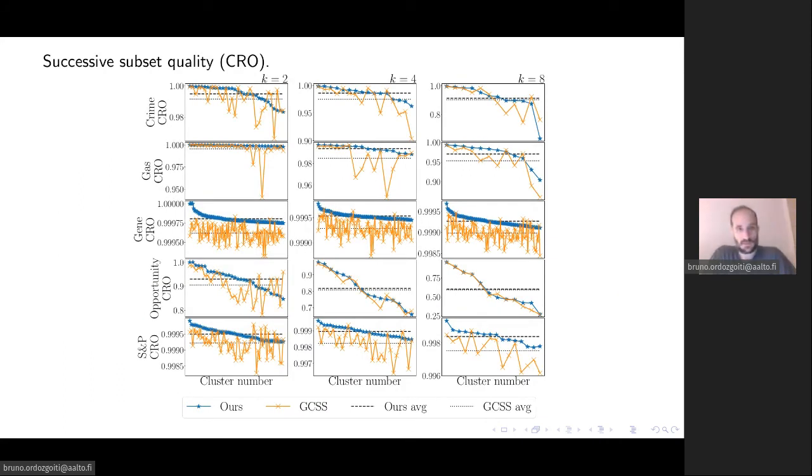In this experiment, instead of finding just one single subset, we find many. What we do is we find the best subset for a given value of K, we remove the corresponding columns from the data set and then we find another one and so on. And we repeat this process until we have found a predetermined number of subsets. And here we report the CRO of the successive subsets that we find.